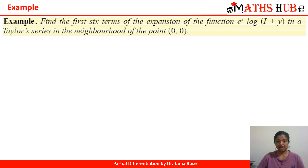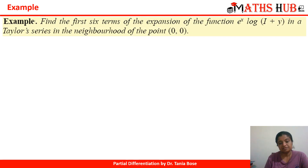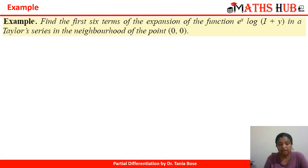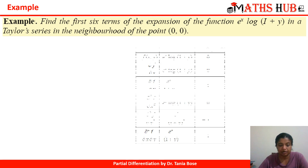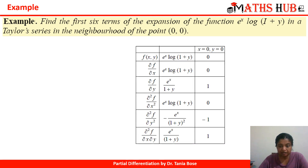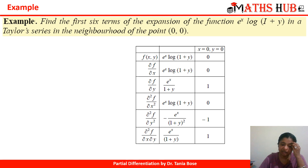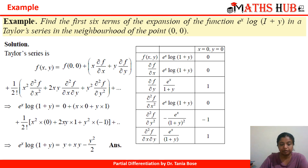Now find the first six terms of the expansion of e^x·log(1+y) in the Taylor series in the neighborhood of the point (0, 0). We calculate all the derivatives up to the required order, and after putting them into the Taylor series we get the expansion as y + xy − y²/2.